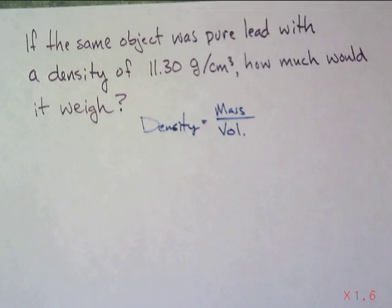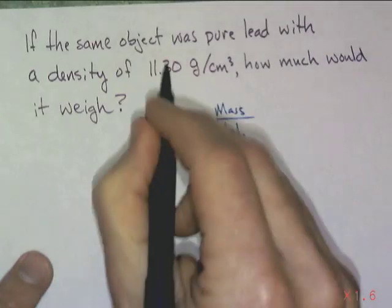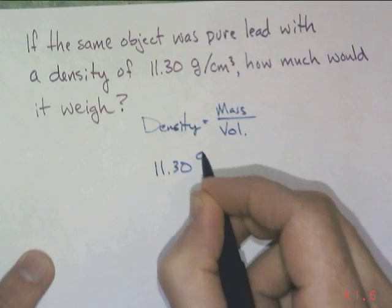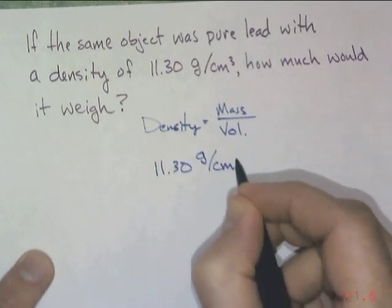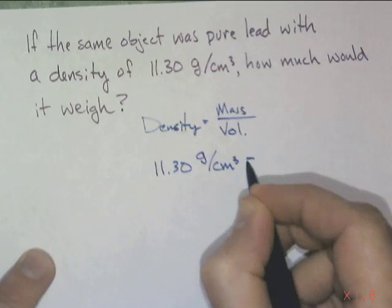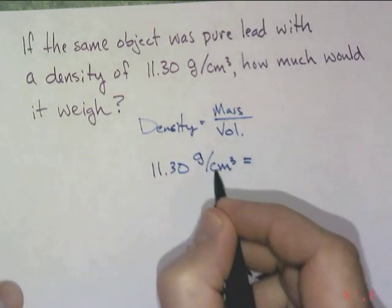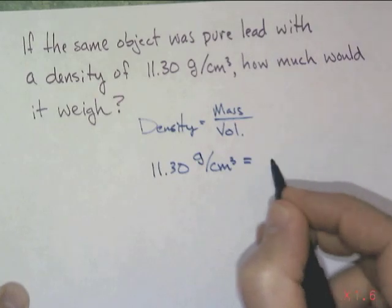Notice that we have to get volume right if we're going to get this problem right. Alright? So our density, we know, is 11.30, and I'm going to include units—your future scientists in there—that's going to help you out and make sure that you're going to do this correctly. Look at that. It's already telling you, grams, centimeters cubed.